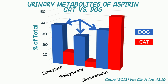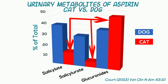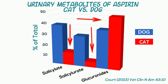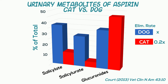In comparison, dogs excrete approximately equal amounts of unchanged salicylate, salicyl urate, and salicyl glucuronides into their urine after administration. But cats excrete mostly salicyl glucuronides with some unchanged salicylate, but only a minor amount of salicyl urate. So the lack of ability to conjugate glycine seems to severely limit the metabolic rate of aspirin in the cat, to the extent that it is about 20% of that of the dog.